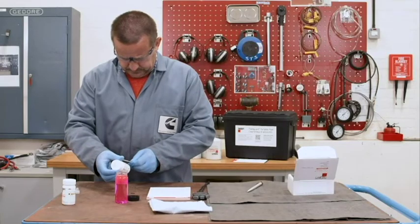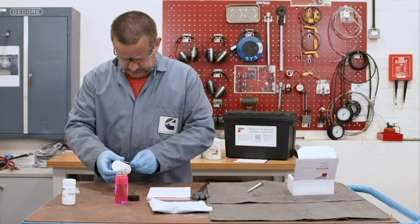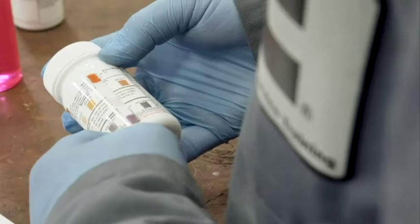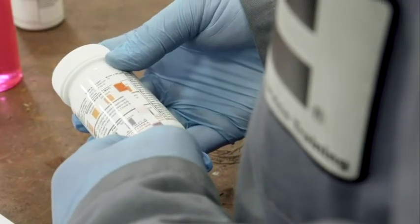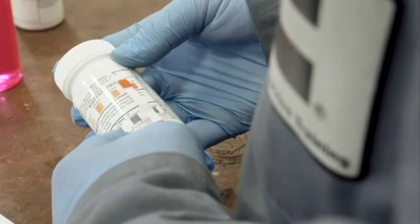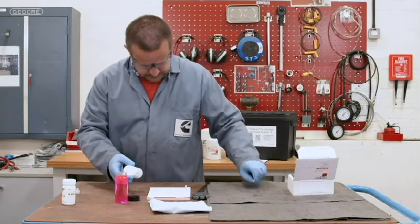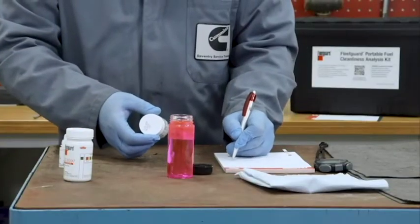Once the 45 seconds have passed we'll need to read and record the results in the following 30 seconds so you do need to act quickly. The first pad indicates molybdate. Find the color on the table that best matches the pad and record the result. For this example the best match is 300.